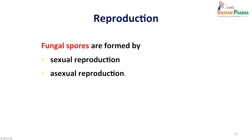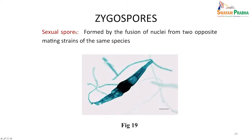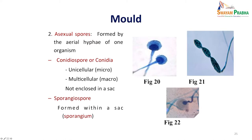Fungal spores are formed by sexual as well as asexual reproduction. Sexual spores are usually formed by fusion of two opposite mating strains of the same species, while asexual spores are formed on the aerial hyphae. Asexual spores can be formed within a sac-like sporangium — the spores within are known as sporangiospores — which can burst and release spores into the air. Or they could be unicellular microconidia, as in Penicillium, or multicellular macroconidia, which can individually germinate and produce new fungi.